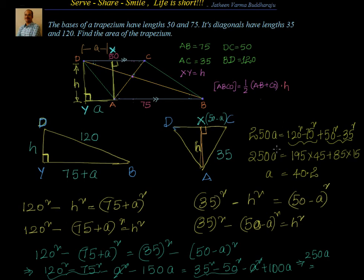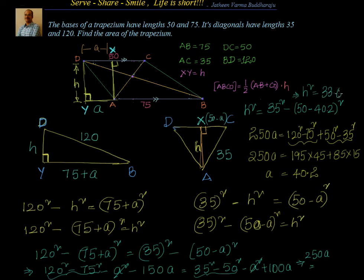Substituting A = 40.2 back, H² = 35² minus (50 minus 40.2)² = 35² minus 9.8², giving H ≈ 33.6. Once we have H = 33.6, the area = ½ × 125 × 33.6.